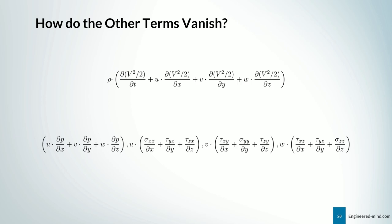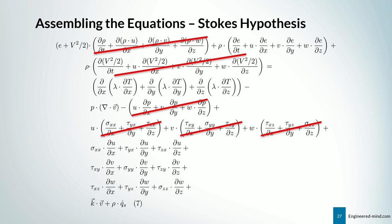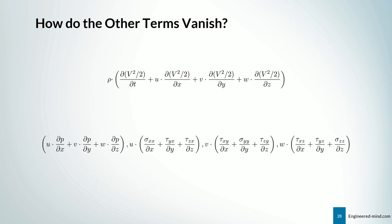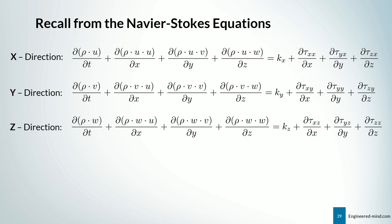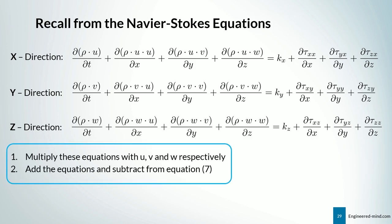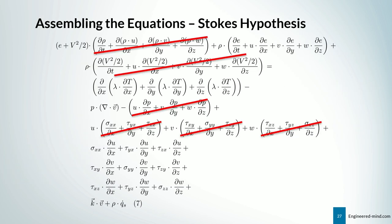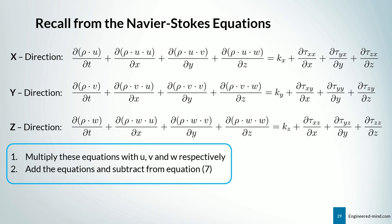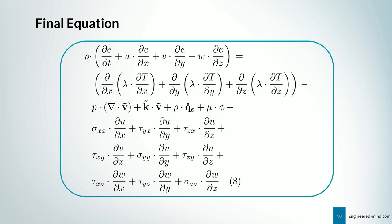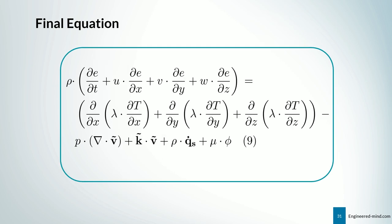We are left with five remaining terms. To eliminate them, recall the Navier-Stokes equations for the x, y, and z directions, multiply them by u, v, and w respectively, then add and subtract them from Equation 7 — that's how those terms drop out, and it's a nice exercise to try yourself. The final equation we arrive at is the beautiful Equation 8, which can be rewritten in a more elegant form featuring the dissipation function φ.